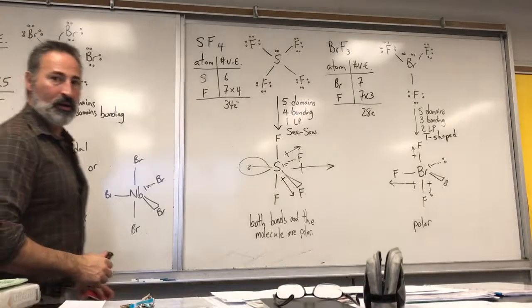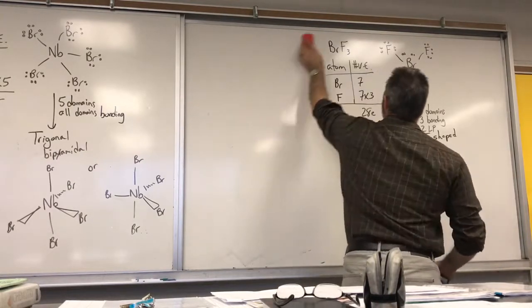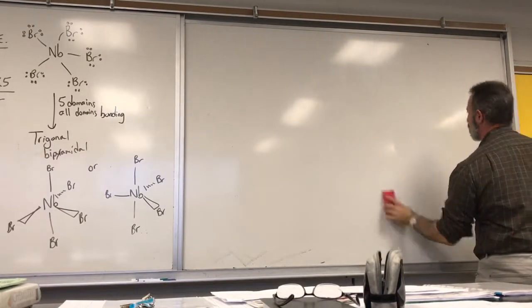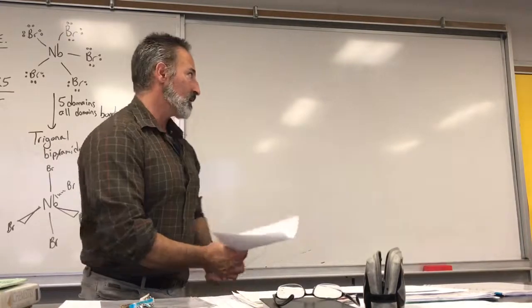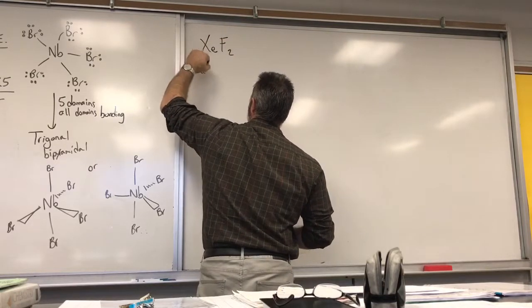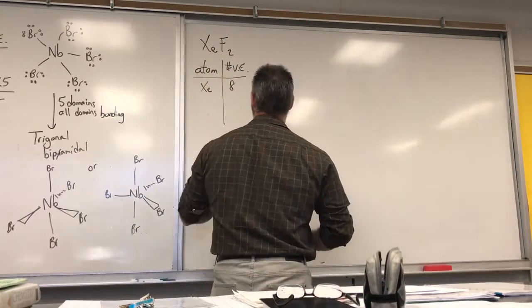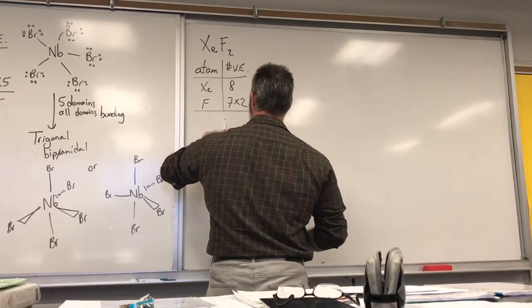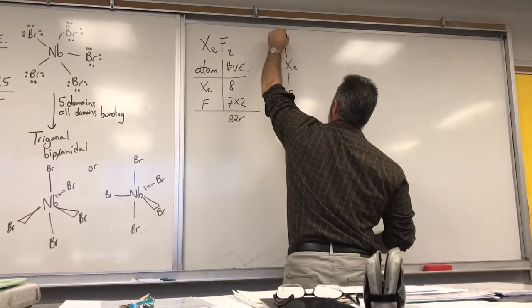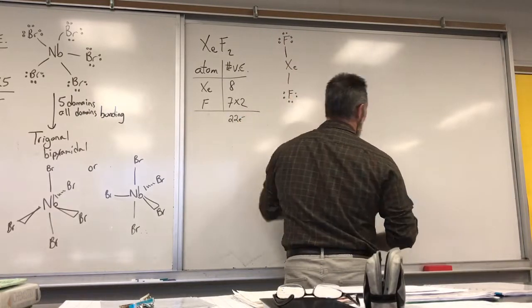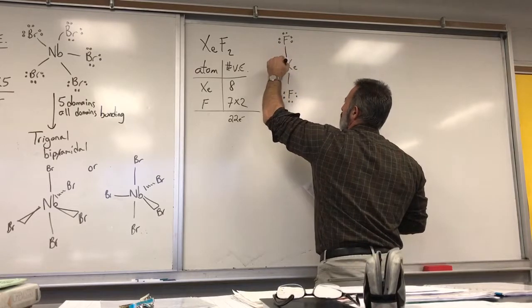Now we can do a couple more examples from the sheet. Xenon difluoride: let's account for how many valence electrons there are. Xenon is a noble gas, so it has eight valence electrons. Fluorine has seven and there are two fluorine atoms, so 14 plus 8 gives you 22 electrons to account for. Drawing xenon as the central atom uses up 12 electrons; adding the two bonds and completing the octets brings the count up through 14, 16, 18, 20, to 22.